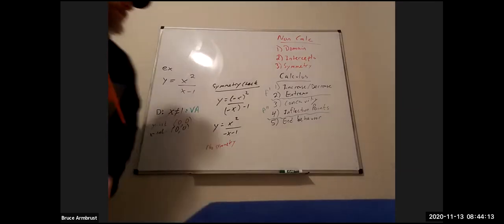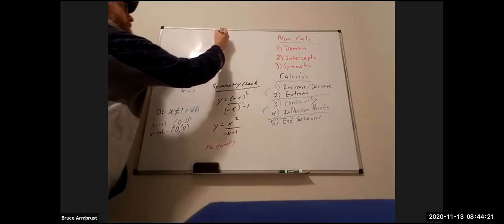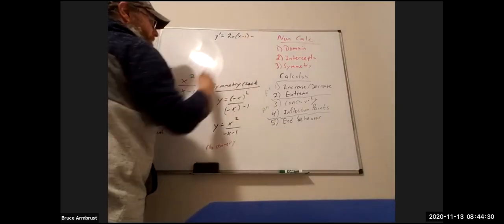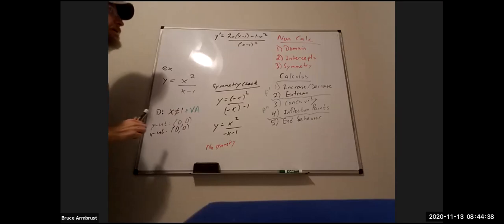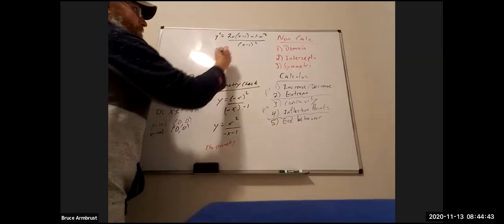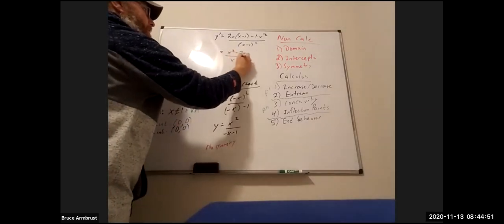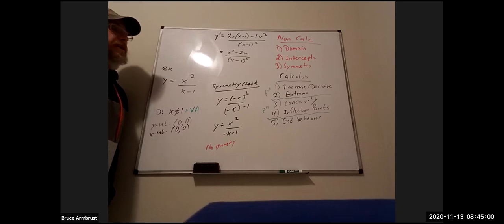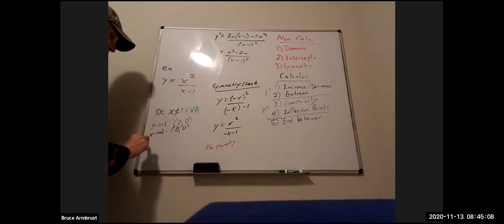Let's get the derivative of x squared over x minus 1. That requires the quotient rule. y prime equals the derivative of the top, 2x, times the bottom, x minus 1, minus the derivative of the bottom times the top — one times x squared — all divided by the bottom squared. Distributing and simplifying, I get x squared minus 2x, all over (x minus 1) squared.